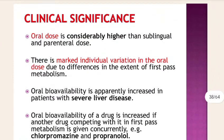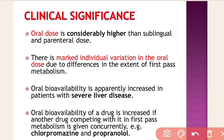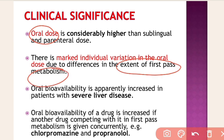The clinical significance of first pass metabolism: the oral dose is considerably higher than the sublingual and parenteral dose, because most of the fraction of the drug is metabolized. For example, nitrate given sublingually is 0.5 mg, while orally it is 5 mg due to extensive first pass metabolism. There is also marked individual variation in oral dose because of differences in the extent of first pass metabolism.